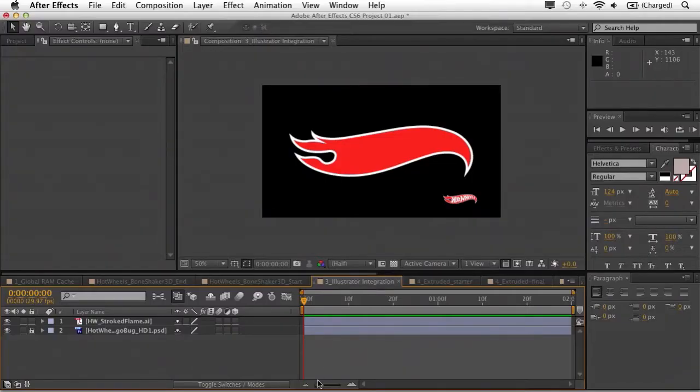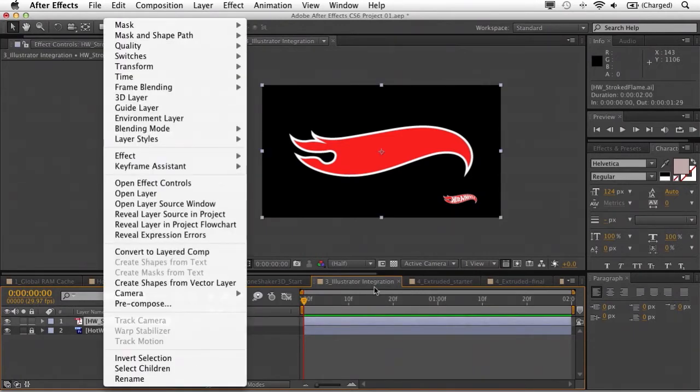Now the next thing that I want to cover deals with Illustrator integration. It's long been a process when working with Illustrator files within After Effects that you had to go back to Illustrator to make even basic changes, things like fill and stroke width. Well, now you can do this all inside of After Effects without ever leaving the app. You'll see here that I have this basic Hot Wheels logo. If I right-click on my AI file, I'm going to choose to create shapes from vector layer.